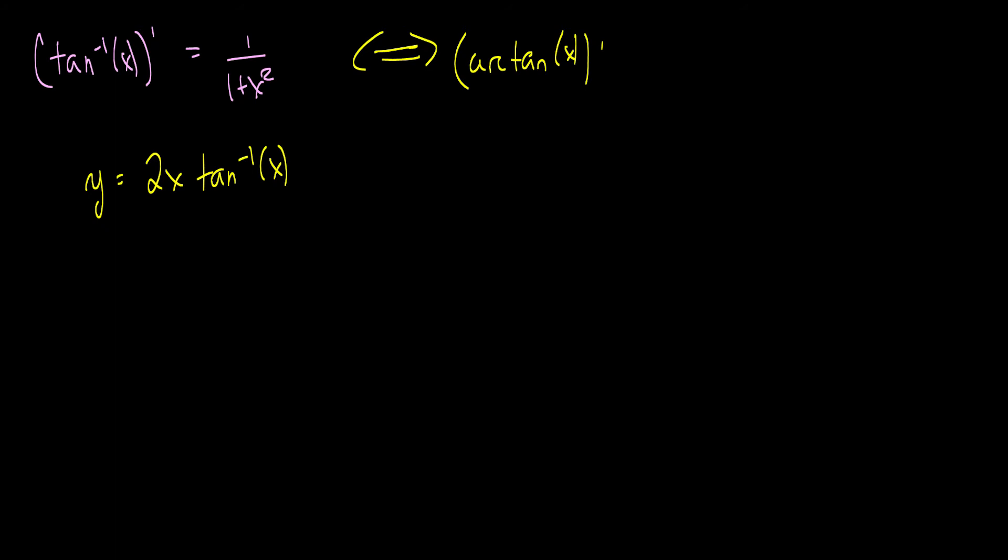All right, so you may notice we once again have a product rule question. So, let's take a look here. The derivative of the first function is 2 times the inverse of tan x, and then we add 2x times the derivative of tan inverse x, which is 1 over 1 plus x squared. So, we're just going to write this down here. And here we go. This is the derivative. Very simple question. It's just a matter of memorizing these integrals, or not integrals, derivatives.